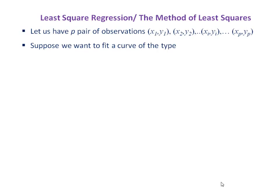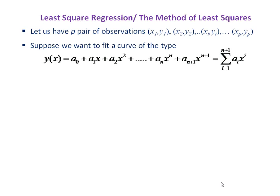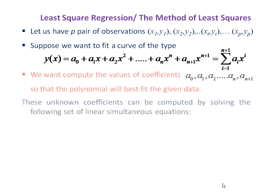Let us now see the method of least squares. Let us have p pairs of observations: (x1, y1), (x2, y2), and so on up to (xp, yp). Suppose we want to fit a curve of the type y(x) = a0 + a1*x + a2*x² + ... + an*x^n, or equivalently the summation for i=1 to n+1 of ai * x^(i-1). We want to compute the values of coefficients a0, a1, a2, and so on up to a(n+1), so that the polynomial will best fit the given data.